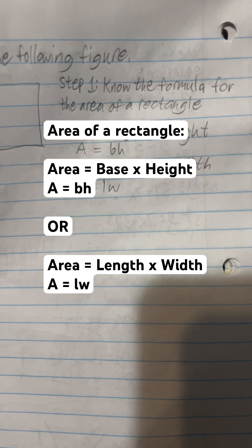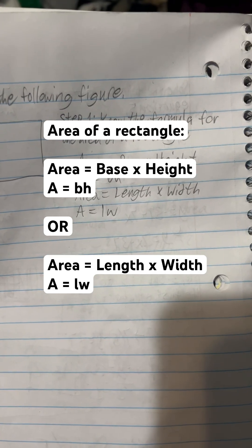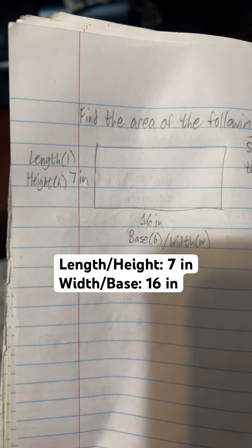The area is equal to the base times the height, or you can say area is equal to the length times the width. They're really the same thing. I'm gonna go ahead and label which is which.